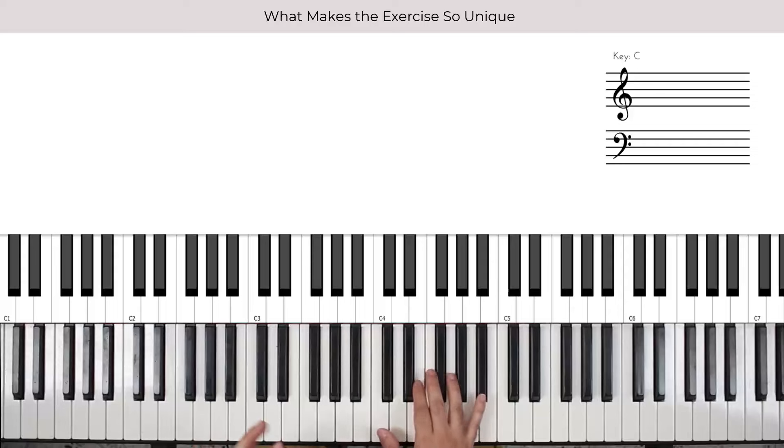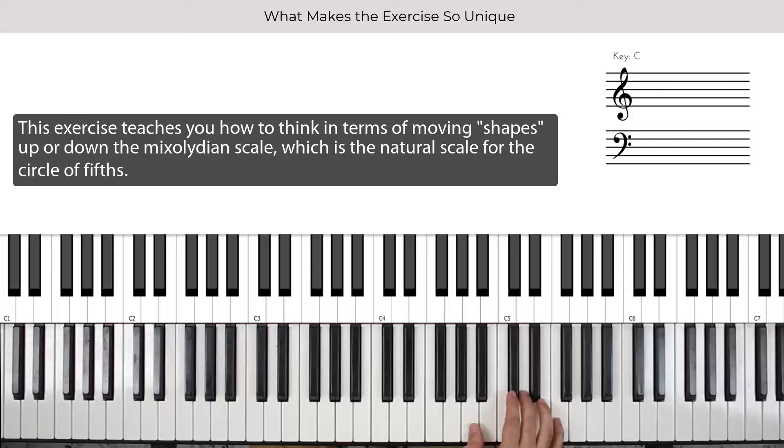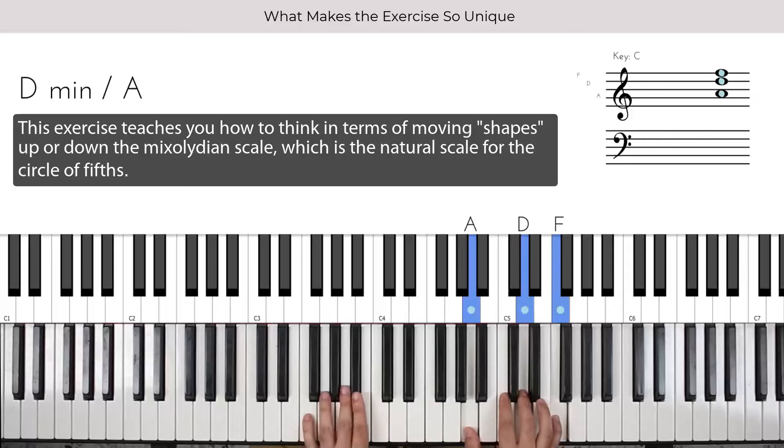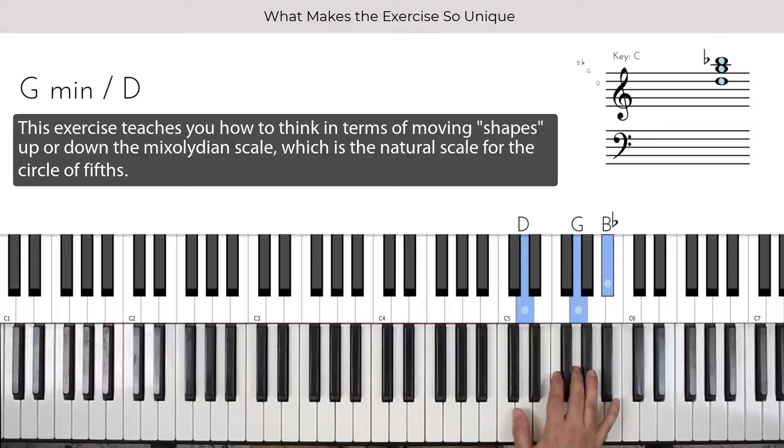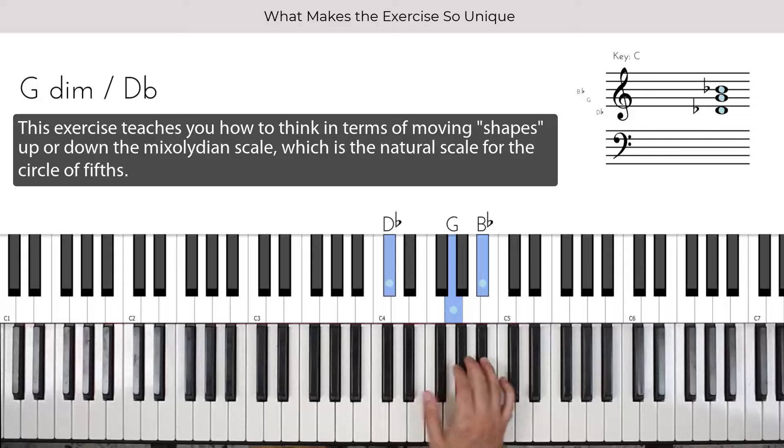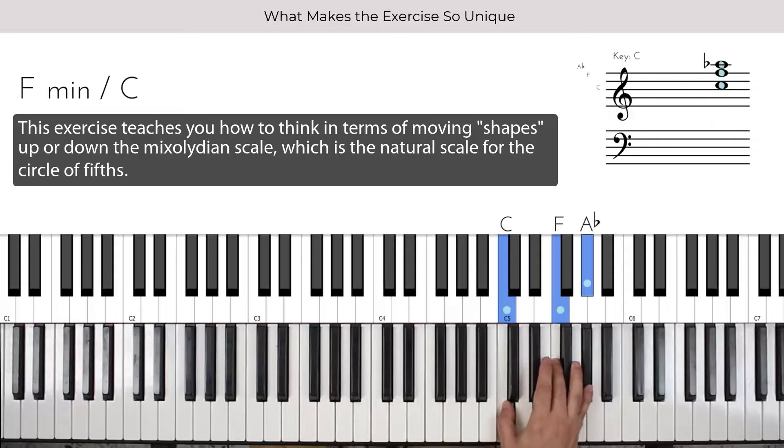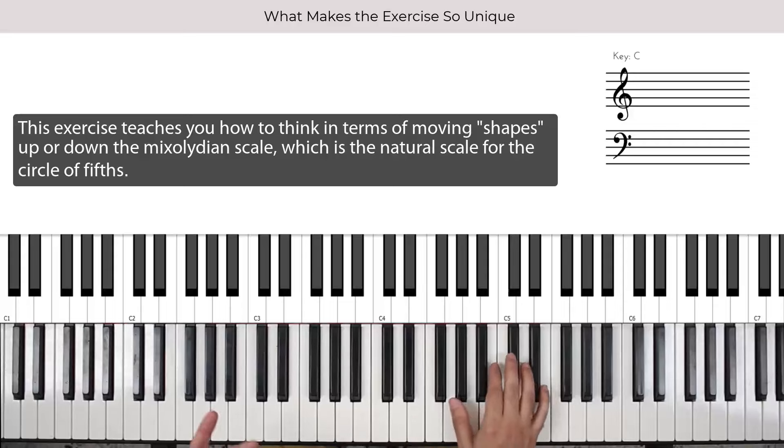But this exercise is a little different. It's a little different in the sense that you're not really working through chords, but actually through scales. So you're taking a shape initially, and you're moving it down the C mixolydian. Then you're taking a shape, the same shape, transposed down the perfect fifth, and you're moving it down the F mixolydian. Then you're doing the same shape, moving it down the B flat mixolydian. Then down the E flat mixolydian. Now, again, why is this important? Well, the mixolydian scale is at the heart of the circle of fifths, and what you want to do is you want to get yourself accustomed to thinking in terms of motion in these mixolydian scales.